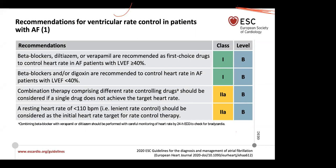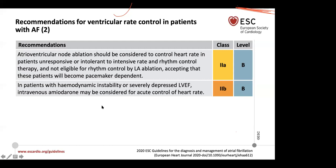AV nodal ablation is a last resort, and these individuals will need a pacemaker afterwards. It is very different from pulmonary vein isolation. Amiodarone is recommended for rate control in the acute setting — class 2B. If you have a patient with rapid AF and access to amiodarone, don't hesitate to use it. Remember that amiodarone is about 37–40% iodine by molecular weight, making it toxic to the lung, liver, and thyroid, and it has significant interactions with warfarin requiring dose adjustments and close INR monitoring.